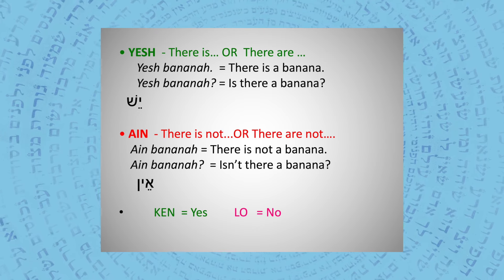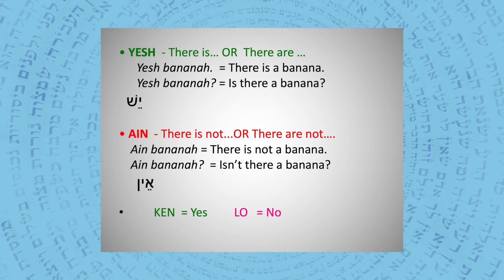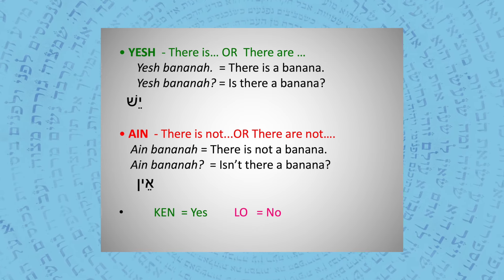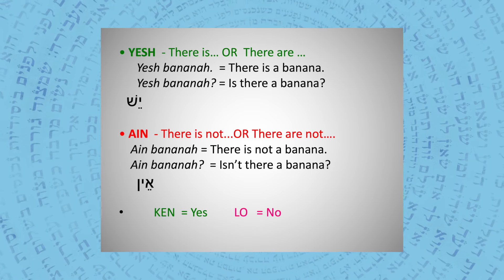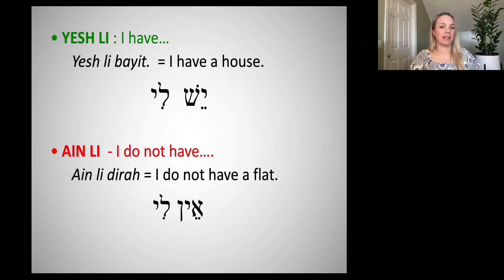If I wanted to say not that there is something, but that I have something, the way to do that in Hebrew uses these little words yesh or ain in combination with a preposition, 'lay,' which means 'to' or 'for.' Then we put a little inflection on the end of 'lay' to say who we're talking about. If we want to say 'to me,' we say 'li,' like it says on the screen here.